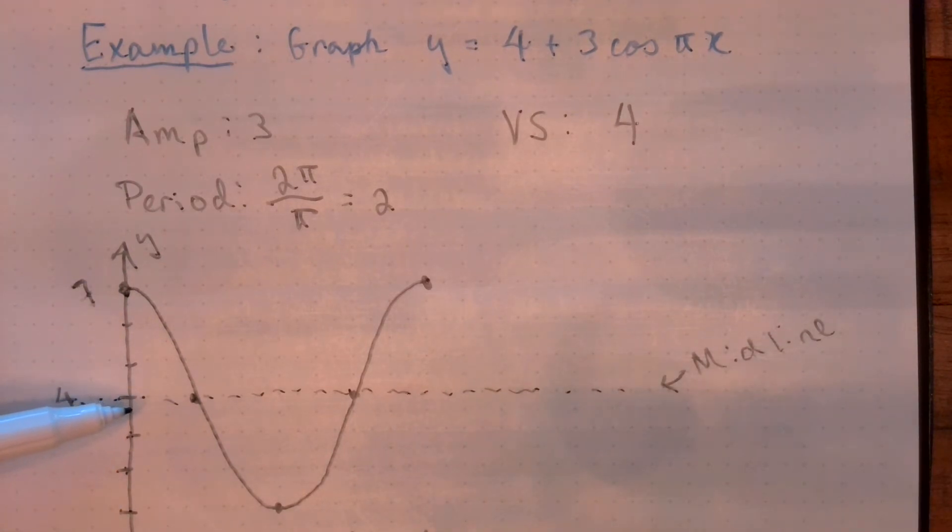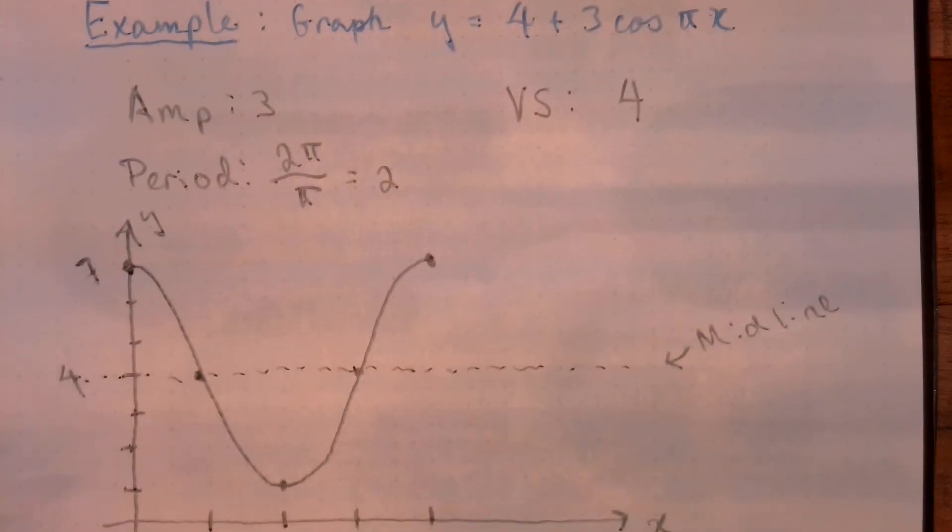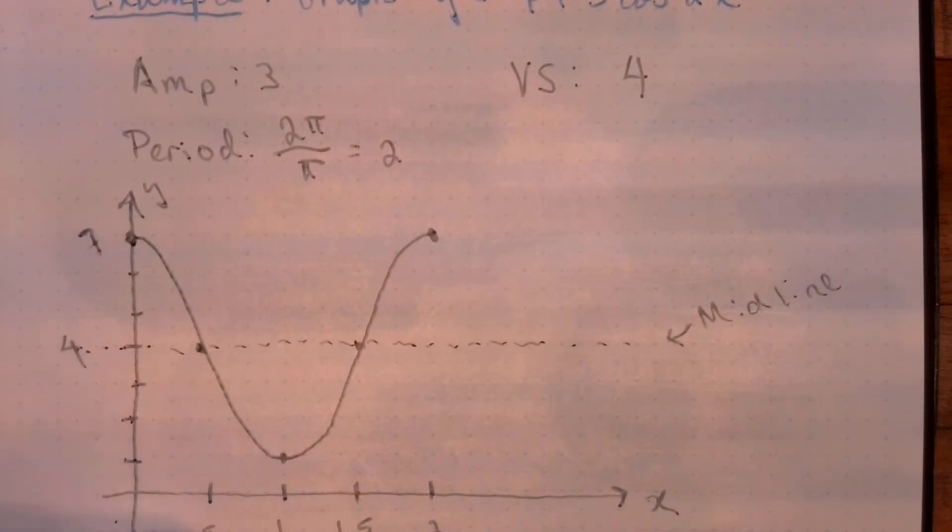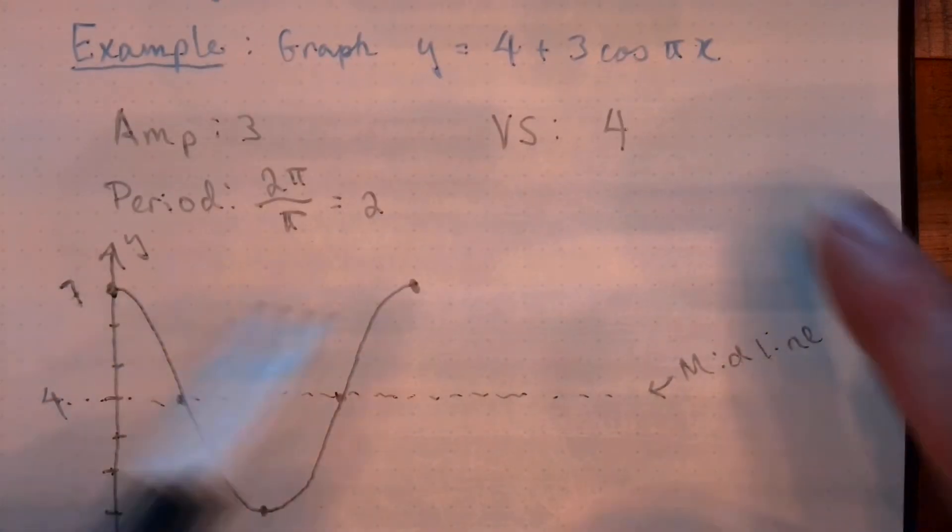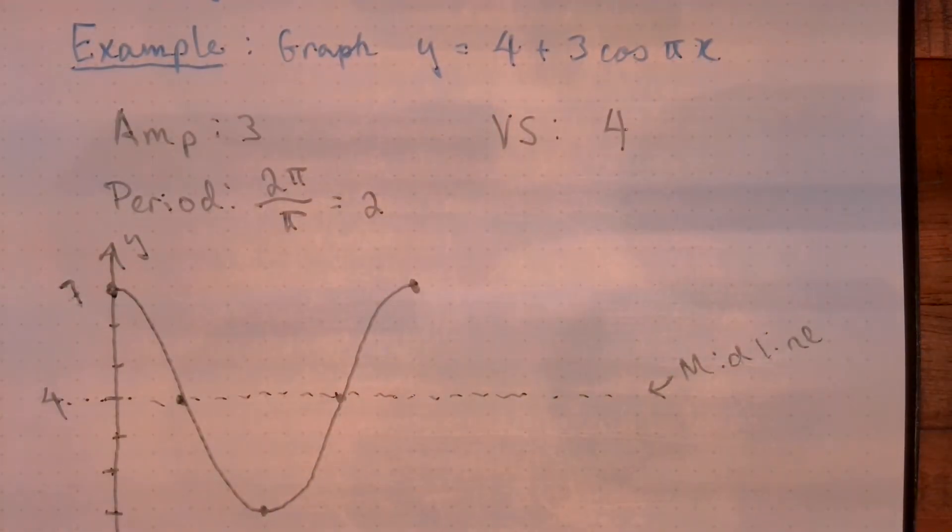The amplitude is how far above or below the midline you go. Since our midline is 4, we go 3 units above, so the graph is reaching a high point of 7. That's also why I didn't devote any space to area below the x-axis. It's not going below the x-axis. Because midline of 4, the lowest we would go is 3 units below that midline. The lowest we go is y equals 1. So we get this picture just by extracting the relevant information from that equation.